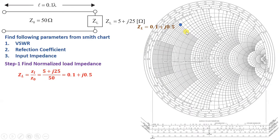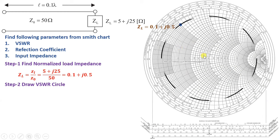Now we need to draw a VSWR circle. The VSWR circle is drawn with respect to the center of the Smith Chart, using this plotted load impedance point as a reference. I have drawn this circle, which is the VSWR circle, centered at the Smith Chart center.